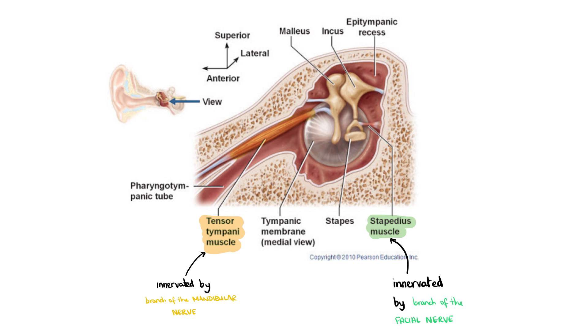Tensor tympani is innervated by a branch of the mandibular nerve and stapedius is innervated by a branch of the facial nerve.